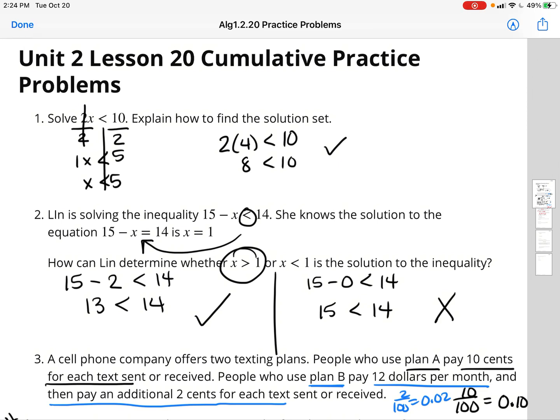How do I know this is correct? I'm going to plug in a number. I know that 4 is less than 5, so 2 times 4 should be less than 10. 2 times 4 is 8. 8 is less than 10, so I know I have this correct.